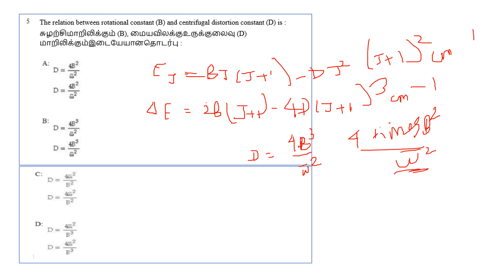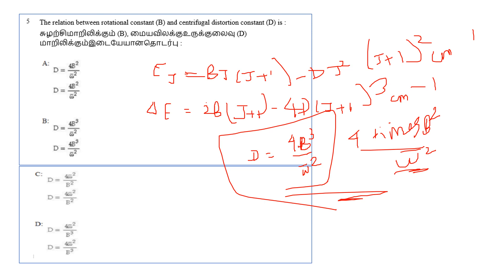From the non-rigid rotator formula, D is equal to 4B³ divided by omega-bar squared, where omega-bar is the vibrational frequency given by (1/2πc)×√(k/μ). So D equals 4B³/omega-bar². Option B is the correct answer. Hope you understand. If you have any doubts, put them in the comment box. Thank you and all the best. The next five questions will be in the next video.